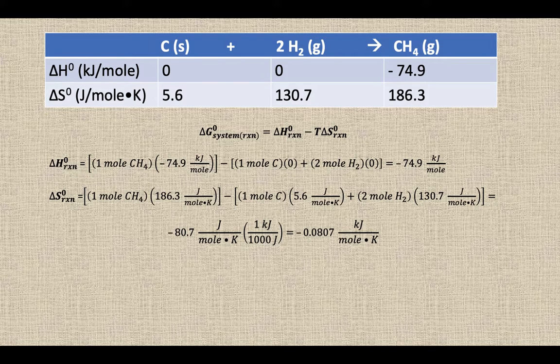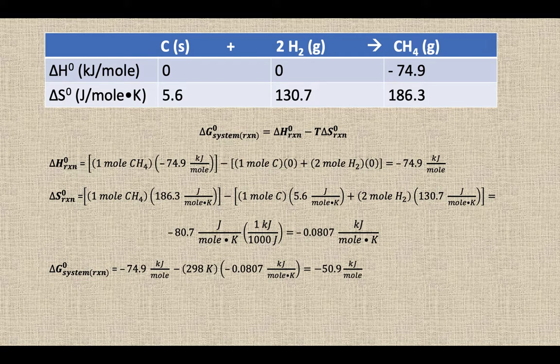Then, if we take those numbers and factor in that temperature as well, we're going to use the temperature of 298 Kelvin, because that's what all of our delta H and delta S of formation values are measured at under standard conditions. So we have a value of negative 50.9 kilojoules per mole for our delta G.